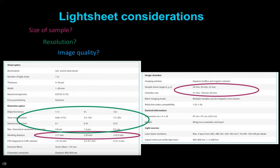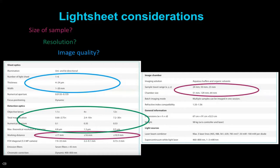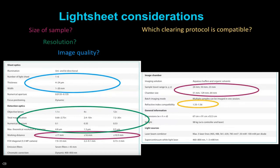Image quality: you want to look at how many light sheets you can get—six would be three from each side. Then your light sheet thickness; you should aim for around five microns. Also, is your clearing protocol compatible? You want to look at compatibility with refractive indices, and you will often find you can use either a water-based protocol or a DBE or ethyl cinnamate based protocol.